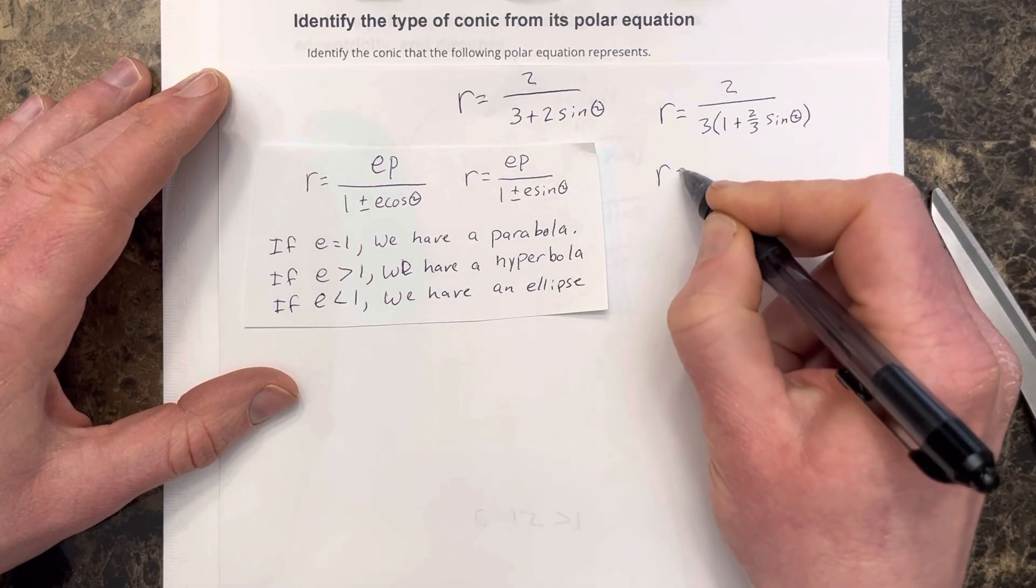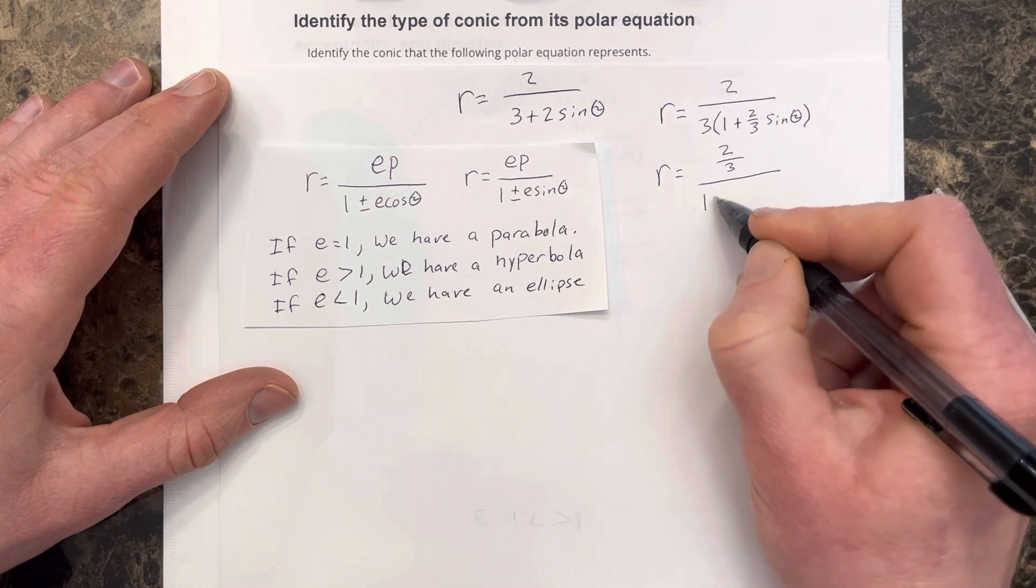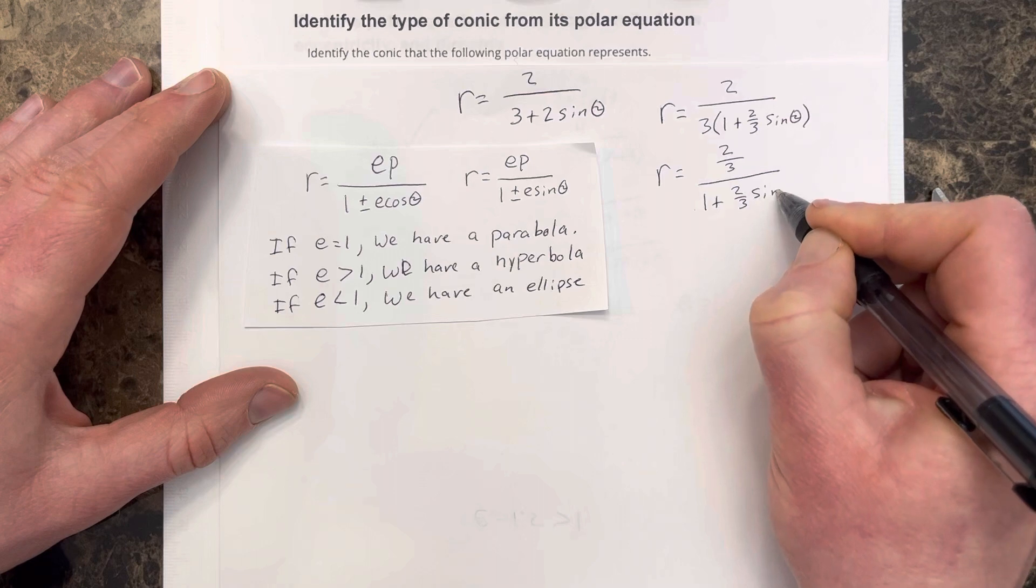I can rewrite this as r is equal to 2 thirds over 1 plus 2 thirds sine theta.